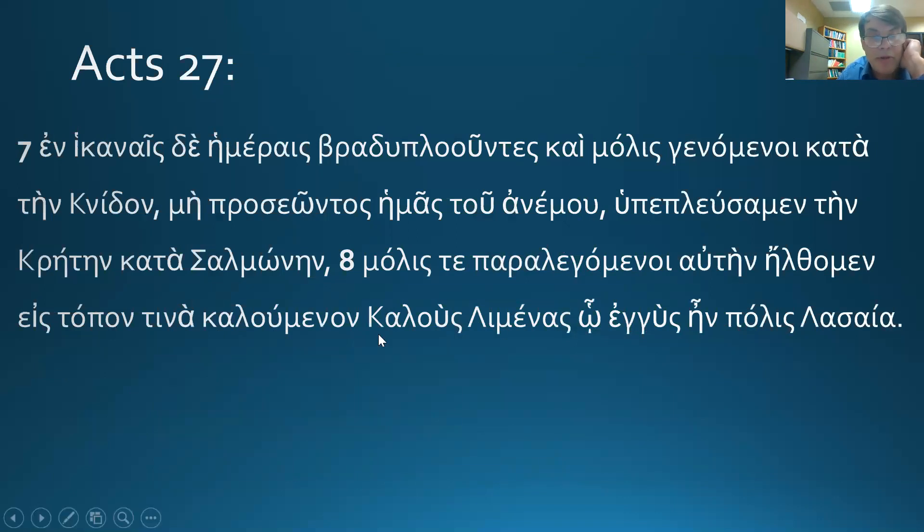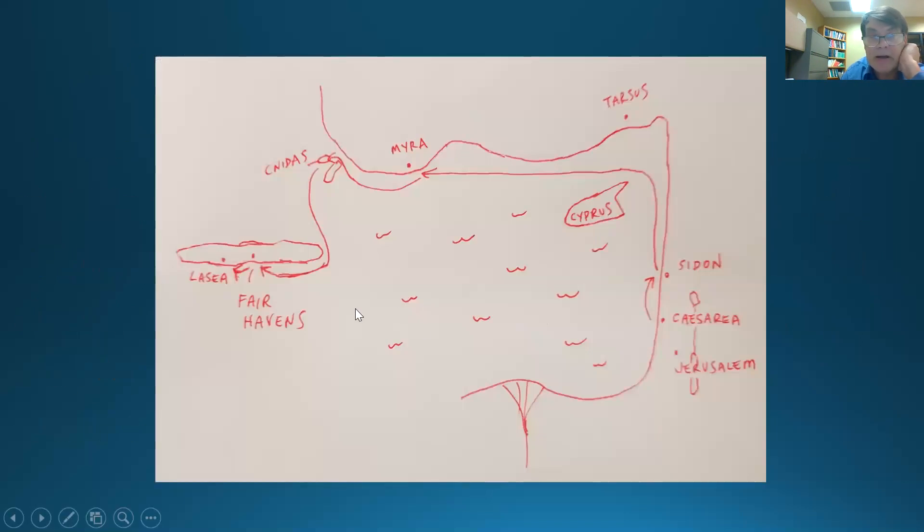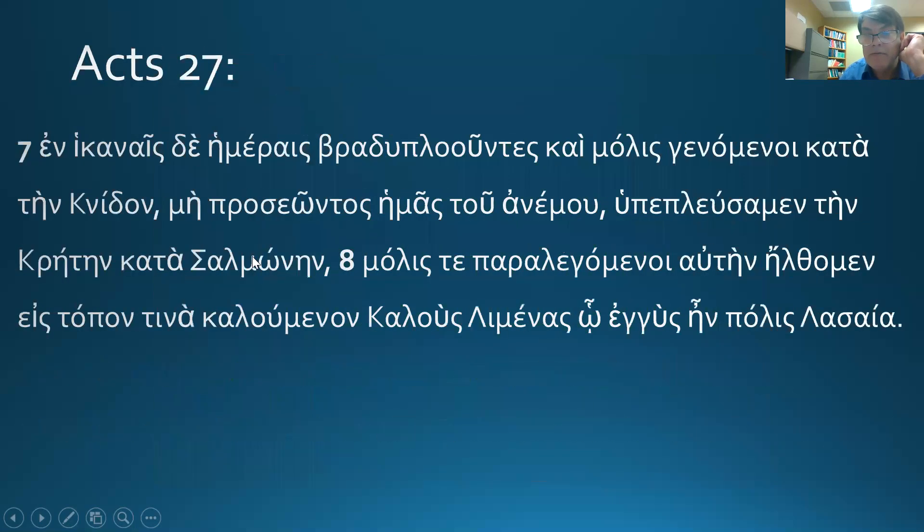So they come to Kalus Menas, Fair Havens, Fair Harbor. So this is harbors, Fair Harbors. Kind of ironic, but so they kind of try to hug the coast of Crete and they come to Fair Havens, which is near Lasea. So this is where we end off our journey today. It's about to go terribly wrong. I can tell you that, but they've made it this far to Fair Havens on the underbelly of Crete.